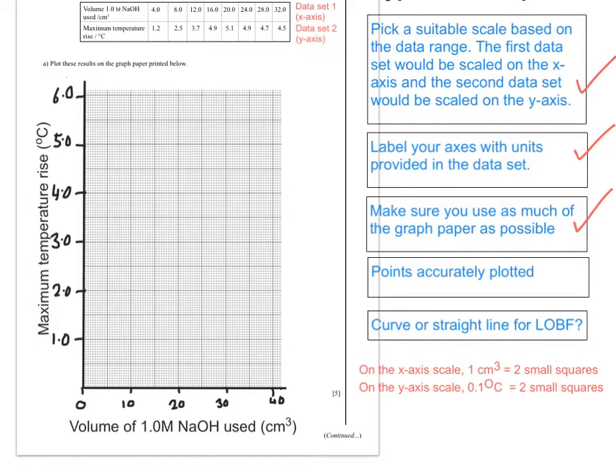To plot the points accurately, I have to decide on my axes what the squares represent. On the x-axis scale, 1 cm³ equals 2 of the tiny squares. On the y-axis scale, 0.1 degrees centigrade equals 2 of the tiny squares. My first point has to be at 4.0 and at 1.2, so I mark my point with an x. I'm going to do the same for all the others. At 20 cm³ of NaOH, the temperature starts to drop.